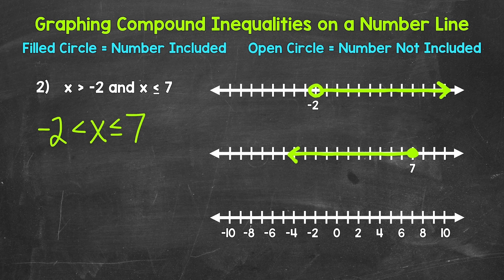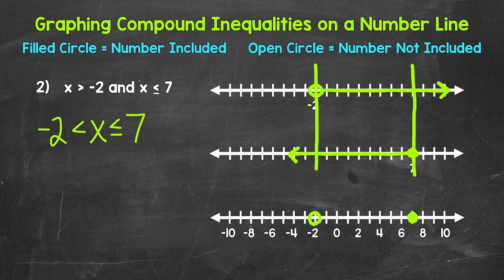Now since this is a compound inequality, we need to combine these — we need to see where they overlap. We want an open circle at negative 2, a filled circle at 7, and then everything in between. This is our graph of x is greater than negative 2 and less than or equal to 7, which represents our compound inequality.